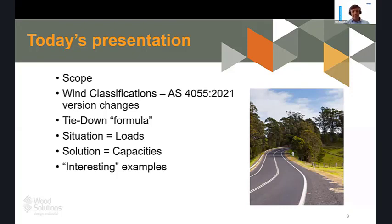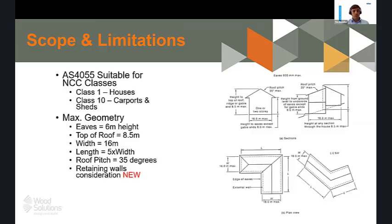We'll do a quick review of things that have changed in the 2021 version of AS4055, which is wind load for housing, called up in the NCC this year. Then we'll get into a bit of engineering: the tie-down formula, how you achieve that, how we get the loads — the situation you're in — then create the right solutions, which is the capacities of all the connectors. Then a few interesting examples at the end to highlight problems you can avoid by doing things correctly.